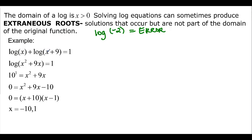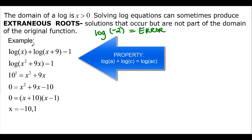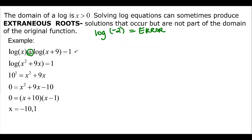Let's go through this example: log x plus log(x plus 9) equals 1. We can apply a property here — since we're adding logs, we can combine into one log. So log of x times (x plus 9), which is x squared plus 9x, equals 1. Then we exponentiate: 10 to the log of (x squared plus 9x) equals 10 to the first. The log and exponential cancel each other out.